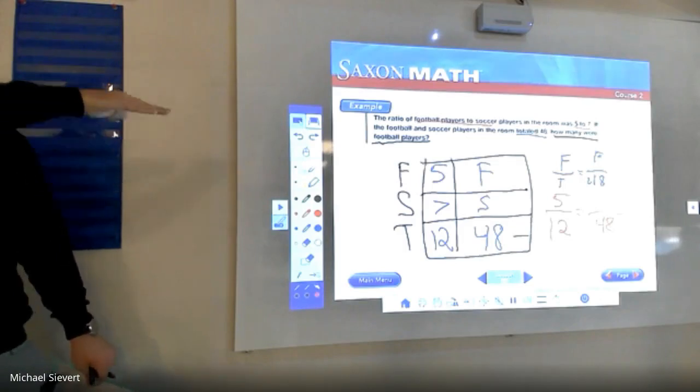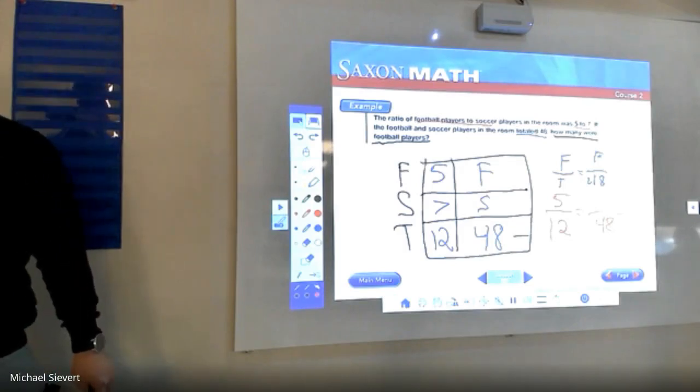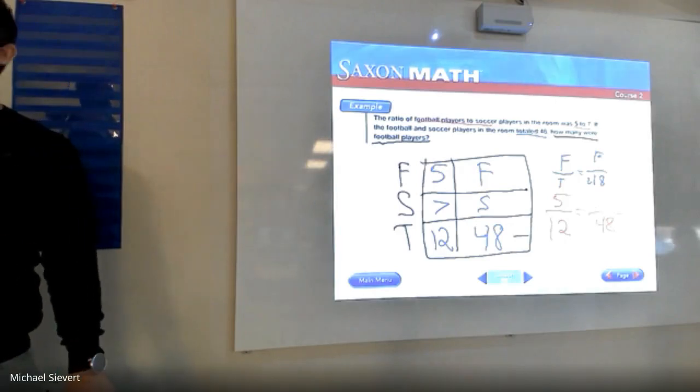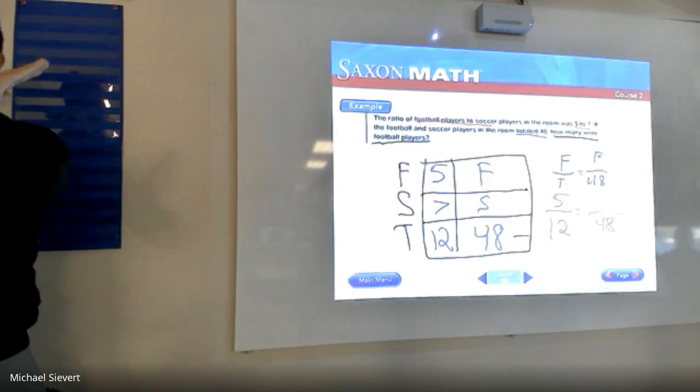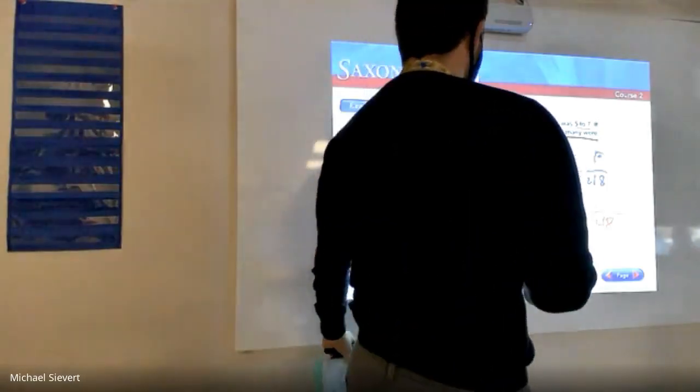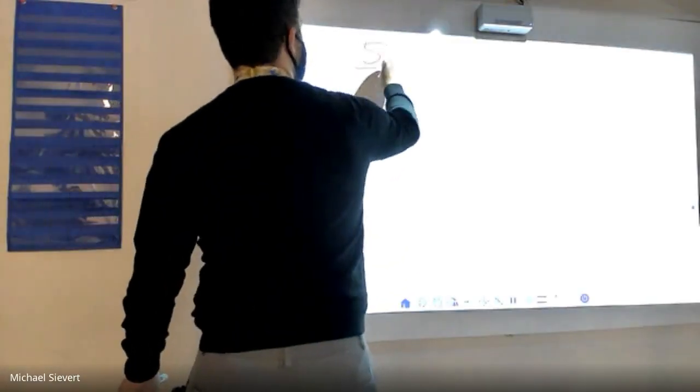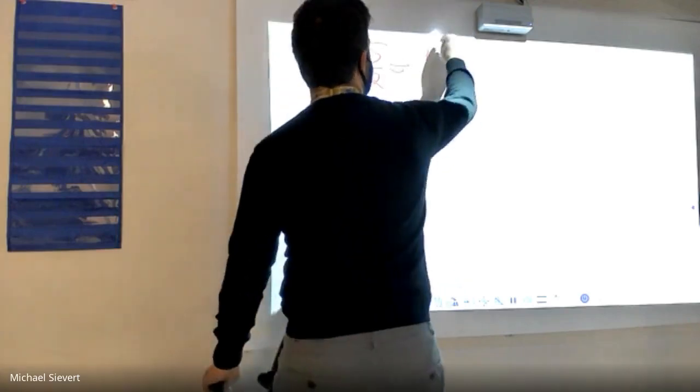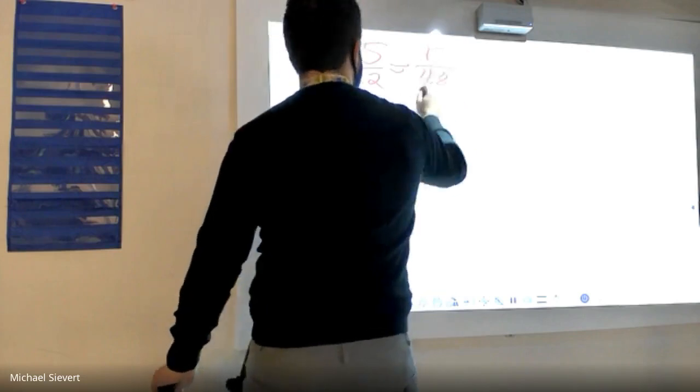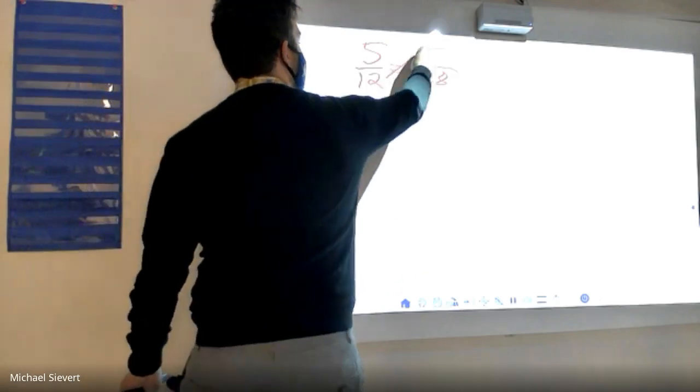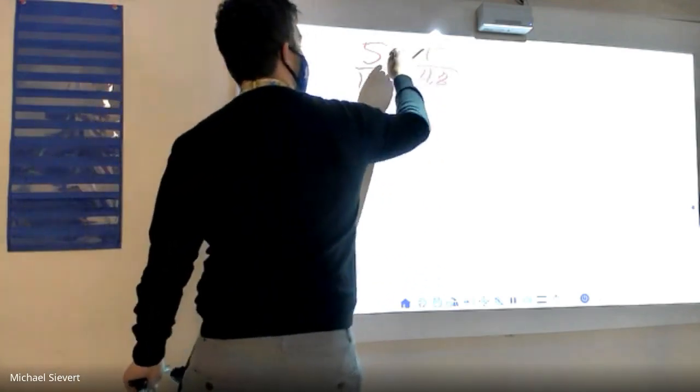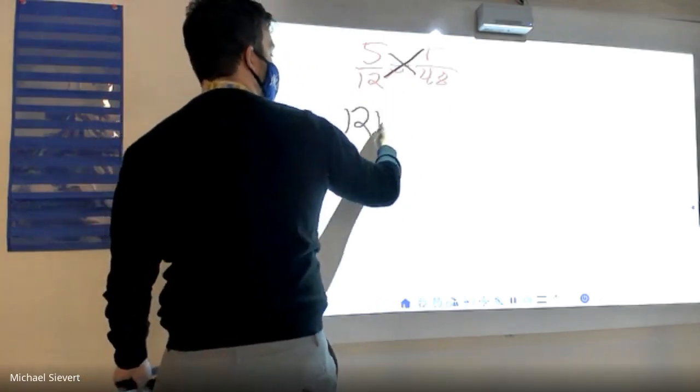We had to do that box system so that we're going to find that total, so we can set up this problem. Now, we're going to do something called cross multiply and divide. Everyone, make an X with your arms. Cross. You're going to cross. Because the numerator up here is going to be multiplied by the denominator and vice versa. That means since we have 5 over 12 equals F over 48, if we were to rewrite that, it would be cross multiply. Which means it would be 12F equals...